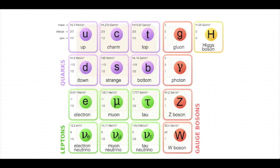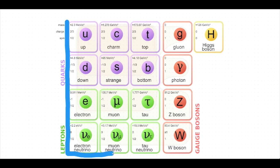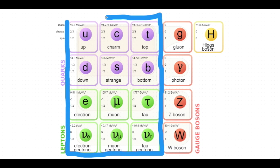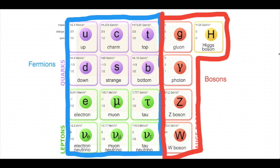The Standard Model is also represented as this — the 25 elementary particles. These particles are also divided into two categories: the fermions and the bosons. Fermions are the particles that make up all of matter, while the bosons are the force-carrying particles, or the particles that intermediate the forces throughout the universe. Other differences between fermions and bosons will be explained in other videos.